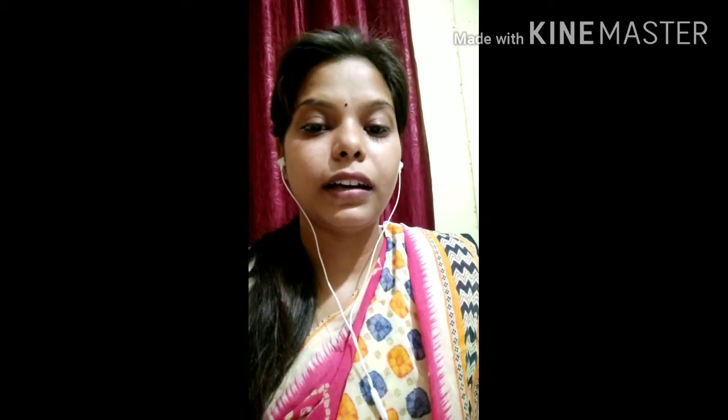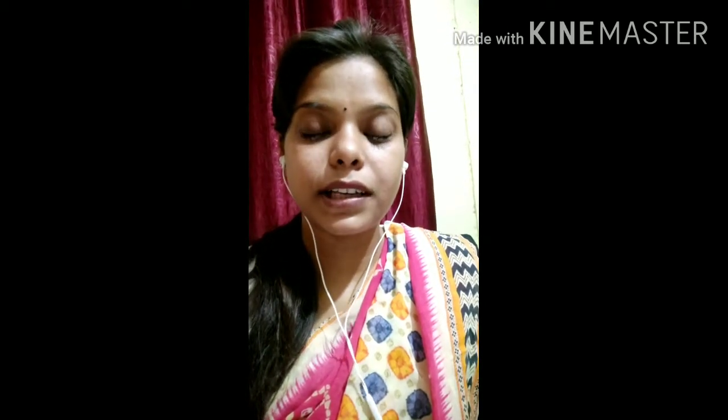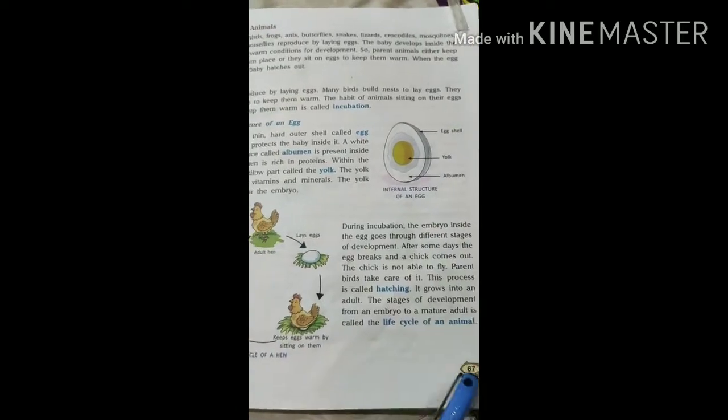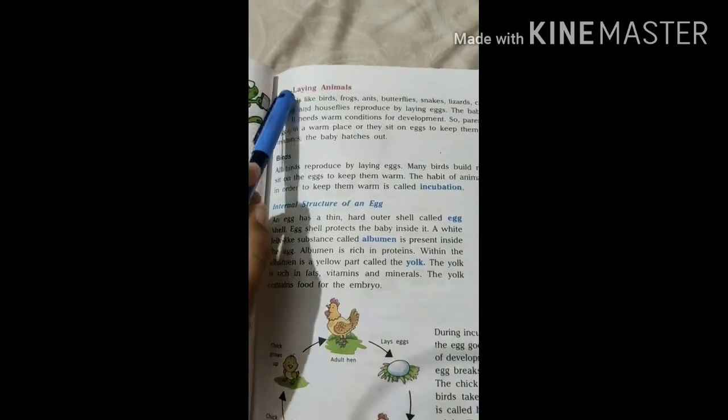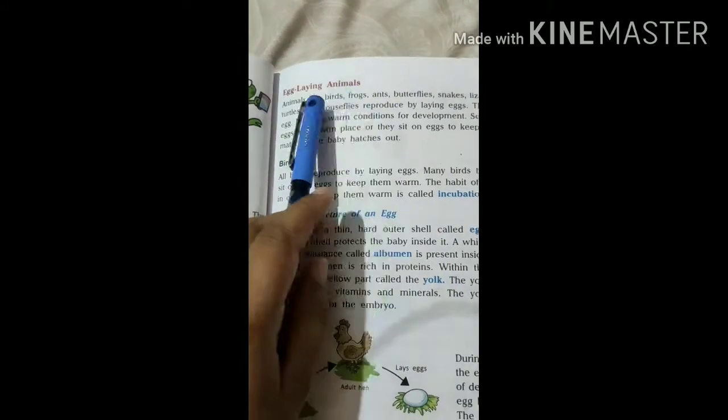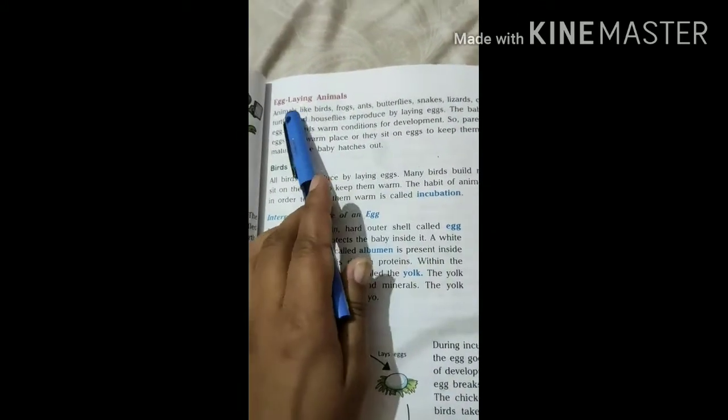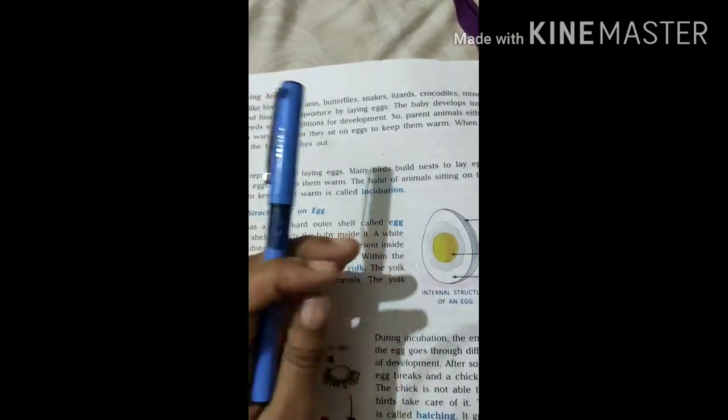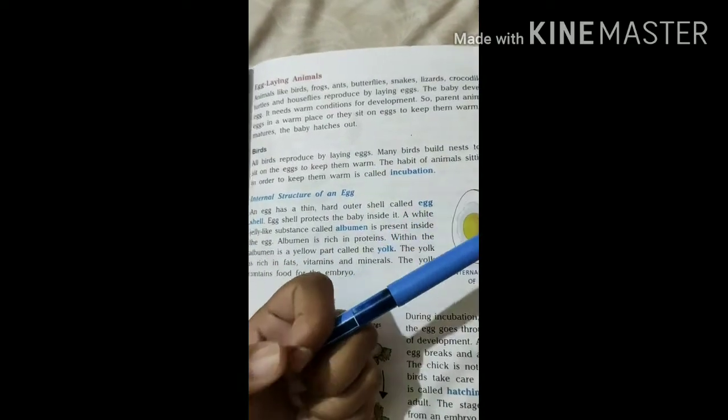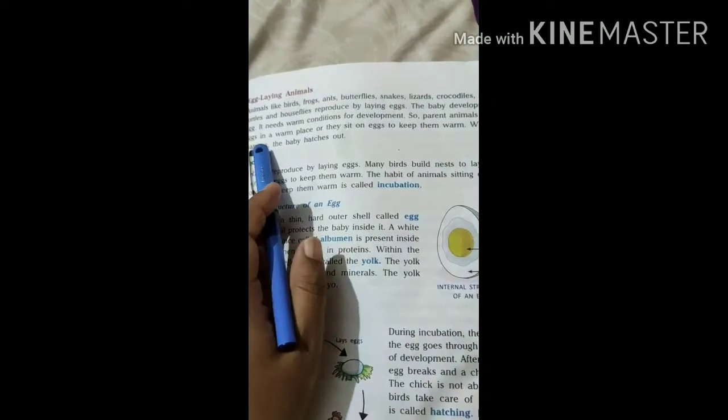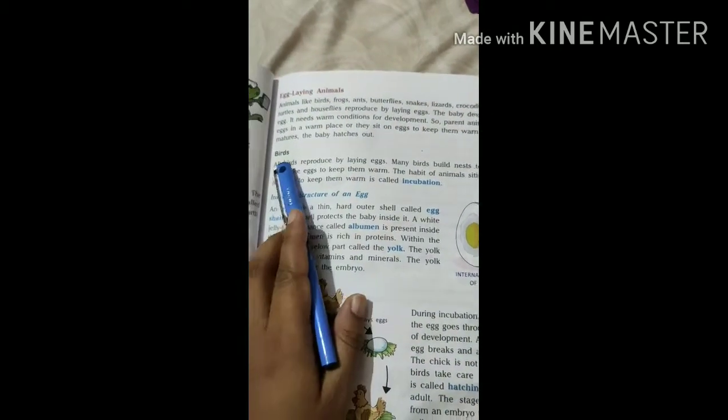Let's begin with the topic. Come to page number 67. Today's topic is birds and we will understand about incubation. This is page number 67. Yesterday we have done egg-laying animals and we talked about some examples of these animals and what conditions are needed to make the egg mature.